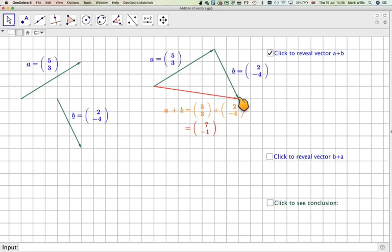Now that can be represented by a single vector, which is this vector here. And we can see that that vector is 7 along and 1 down from our starting position, which was over here.